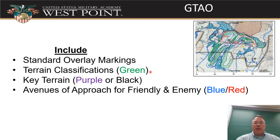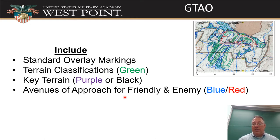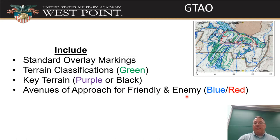For your GTAOS overlay, make sure you include all standard overlay markings. The three big things you need are: terrain classifications — restricted and severely restricted terrain in green; key terrain marked in purple, or black if you don't have purple; and avenues of approach for both friendly and enemy in blue and red respectively. Avenues of approach are paths that lead to key terrain or the objective — they don't just go off somewhere irrelevant. For the enemy in a fixed defense, it's their avenues out; in a meeting battle, it's approaches toward you or how a reserve force could approach to interfere with your mission.